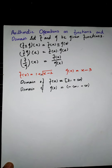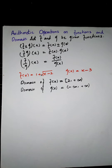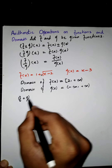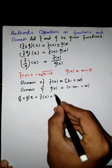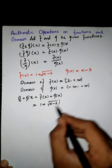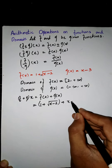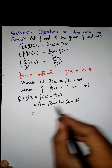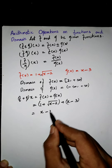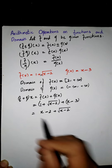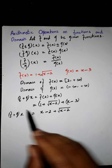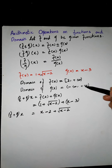Now we find f plus g. We compute f plus g of x, which equals f of x plus g of x. Our f of x is the square root of x minus two, and g of x is x minus three. Adding them gives the square root of x minus two plus x minus three as our new function f plus g of x. The domain will be the intersection of the domains of f and g.